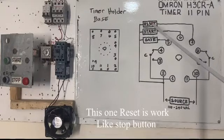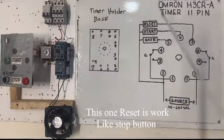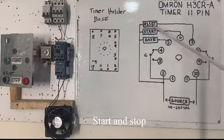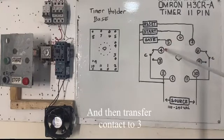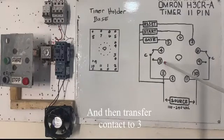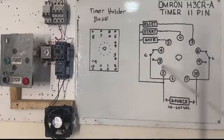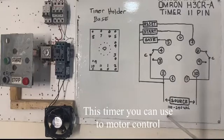This one reset work like stop button, so start and stop. When you press start, this one here, it's counting 5 seconds and then transfer to 3, then energize the contactor. This timer you can use in motor control.